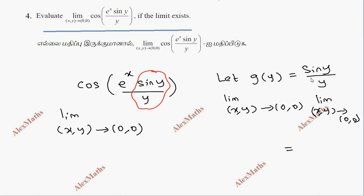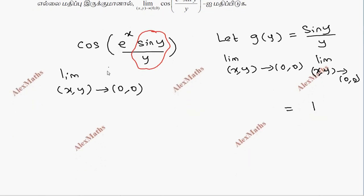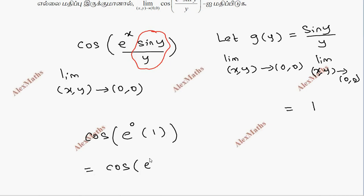Since the limit of sin(y)/y is 1, we apply that to our expression. This gives cos(e^0) times 1, which is cos(1). So we get cos(1), because e^0 equals 1 — anything to the power 0 is equal to 1.